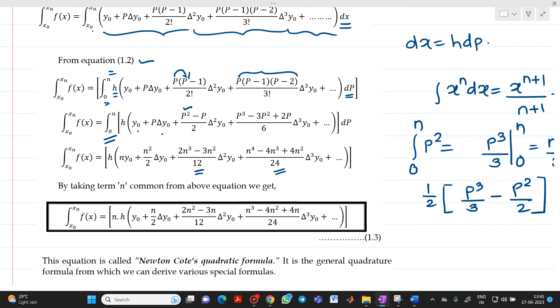We will take n common from all the terms. It will be n into h into bracket. This y0 term will be there. If we take n common, we will get n by 2 delta y0. If we take n common, we will get 2n square minus 3n by 12 delta square y0. If you take n common here, n cube minus 4n square plus 4n upon 24 del cube of y0. This equation 1.3 we got is called Newton's-Cotes quadrature formula.